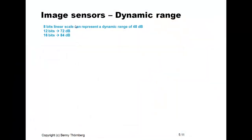But then we run into the next problem: how to visualize this for a human on a display system. A typical data width for pixel data is 8 bits. With an 8-bit linear grayscale we can represent a maximum dynamic range of 48 decibels; 12 bits corresponds to 72 decibels, and 16 bits to 84 decibels. Since 8 bits is the most common data representation for any display system, we have a limitation of 48 decibels. So we need to do something in order to represent this higher dynamic range on a display system with lower dynamic range.